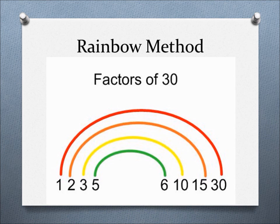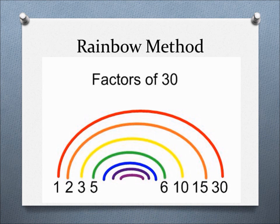As you can see, we have 5 and 6 left, which means that there are no other numbers in between that can be factors of 30. And our rainbow is complete.